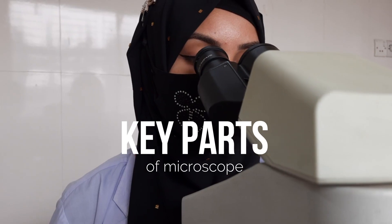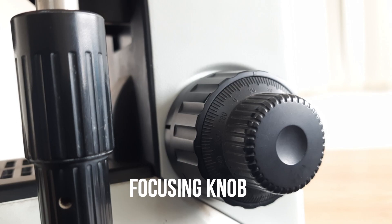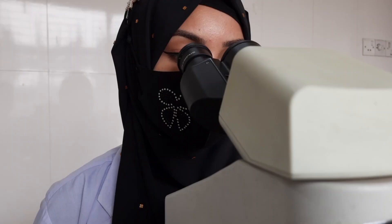A typical compound microscope is composed of several key parts including the base, arm, stage, objectives, eyepiece, focusing knobs, light source, and condenser. Each of these parts plays a vital role in helping us observe tiny specimens.